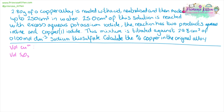2.8 grams of copper alloy is reacted with acid, neutralized and made up to 250 cm³ in water. From this, a 25 cm³ solution is reacted with excess aqueous potassium iodide and two products form — aqueous iodine and copper(I) iodide. The mixture is then titrated against 29.8 cm³ of 0.1 mol dm⁻³ sodium thiosulfate. Calculate the percentage copper in the original alloy.